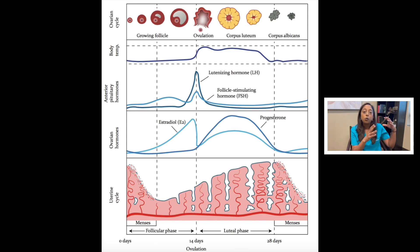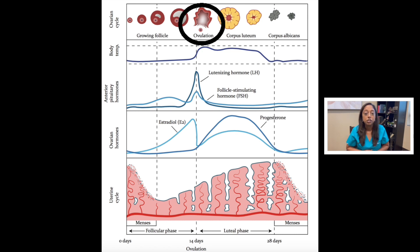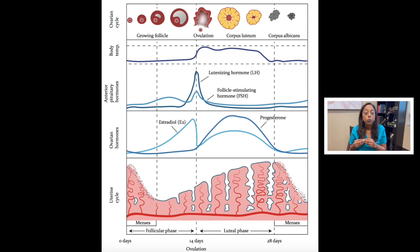Once the follicle reaches a certain size and a certain critical level of estrogen is reached, the follicle will release the egg in a process called ovulation. After that, the fallopian tube will come and pick up the egg. The egg will travel down the fallopian tube and meet the sperm — that is fertilization — and then we have an embryo. The embryo will travel the rest of the distance down the fallopian tube and into the uterus, and that's when implantation would occur.